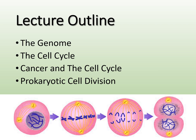Today we're going to start off talking about the genome — what is the genome, what are chromosomes, what is DNA. We'll put that all together with the genome. Then we're going to focus the majority of our time on the cell cycle, what happens during cell division, and what can go wrong with the cell cycle, which is how we get cancer. We'll also briefly cover prokaryotic cell division at the end.